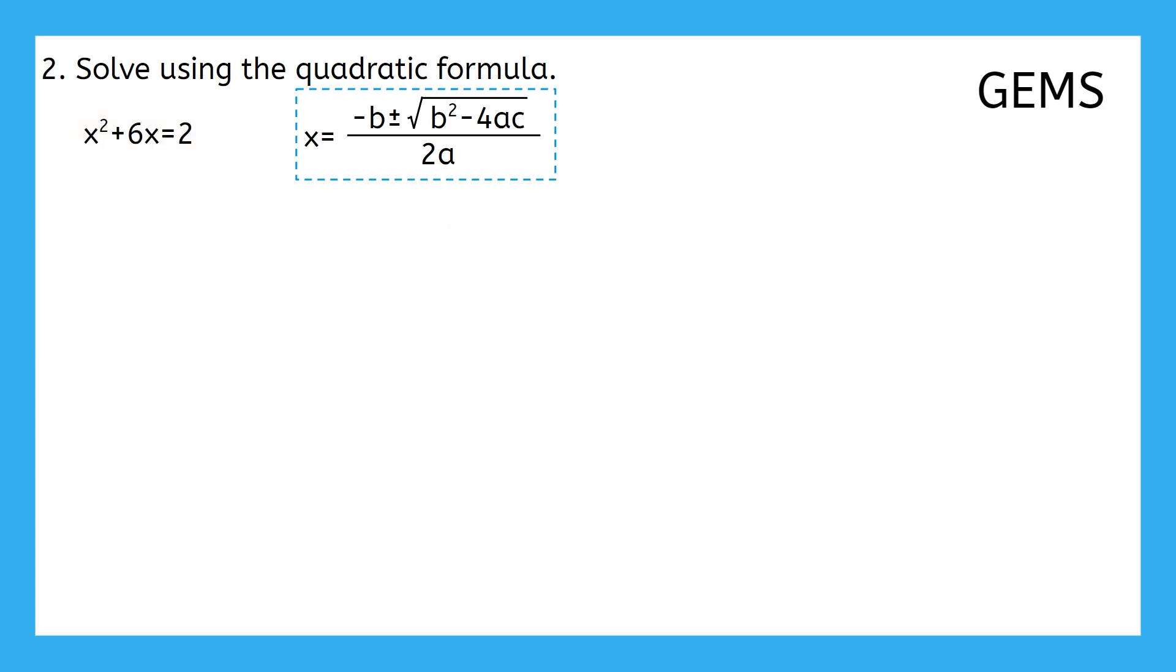x squared plus 6x equals 2. Before we can use the formula, there is a minor problem we need to address. Can you spot what it is? Before we can use the formula, our equation needs to be in standard form: ax squared plus bx plus c equals 0. So how can we fix it? If we subtract 2 from both sides, now our equation is equal to 0 and in standard form.